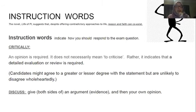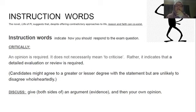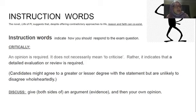A note on instruction words: the supplementary paper, November 2018 paper, and November 2019 paper are all asking you to critically discuss an aspect of the novel. Instruction words indicate how you should respond to the exam question. 'Critically' does not necessarily mean to criticize — it simply means you must give a critique or an analysis, indicating that a detailed evaluation or review is required. When thinking critically, you're looking at aspects of the topic you agree with and aspects you might not agree with.